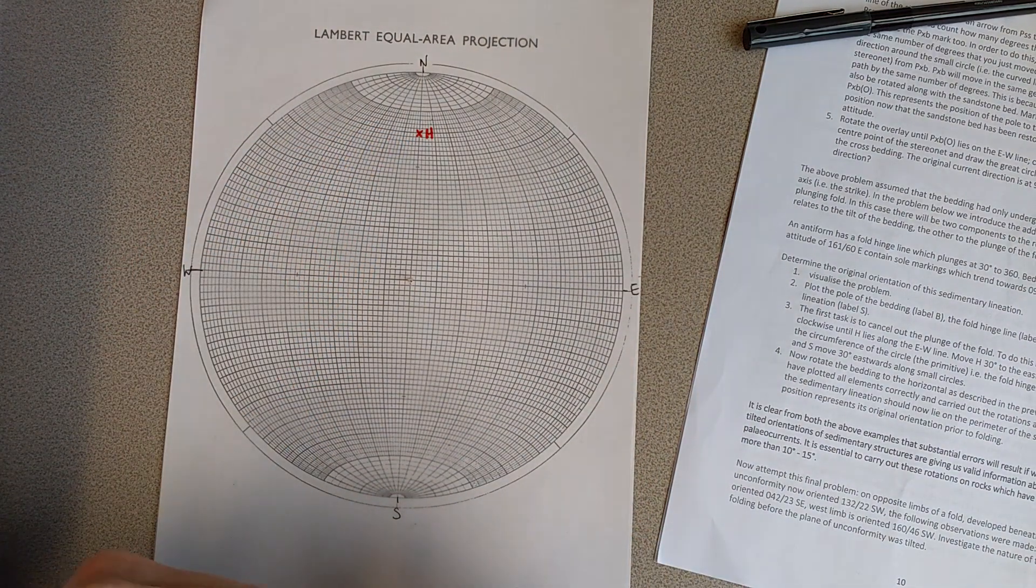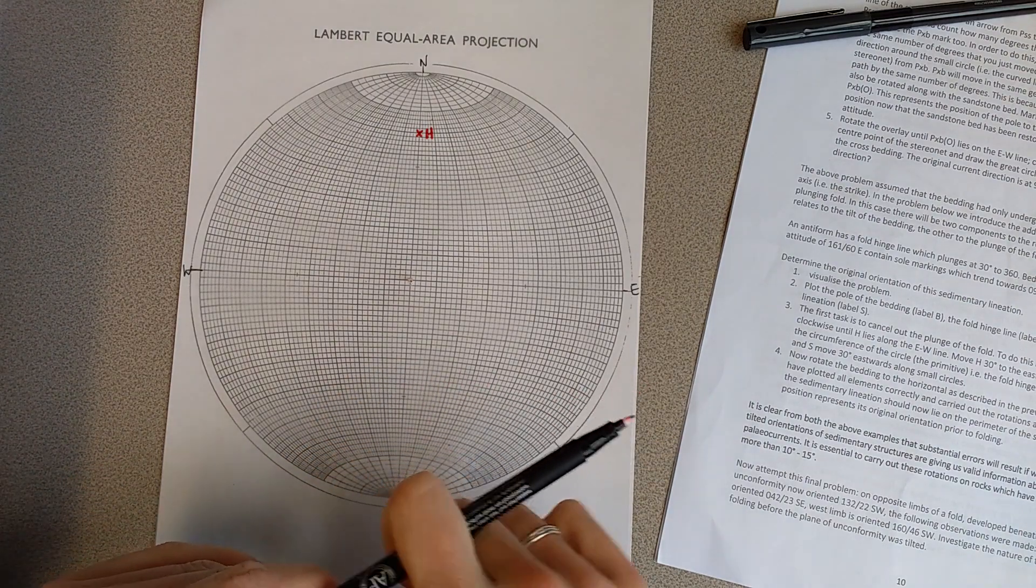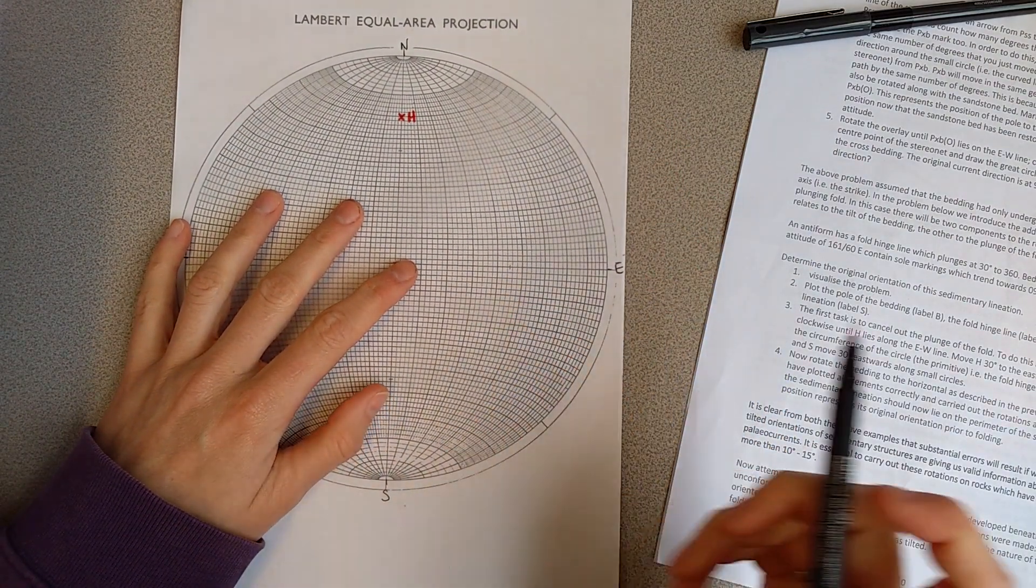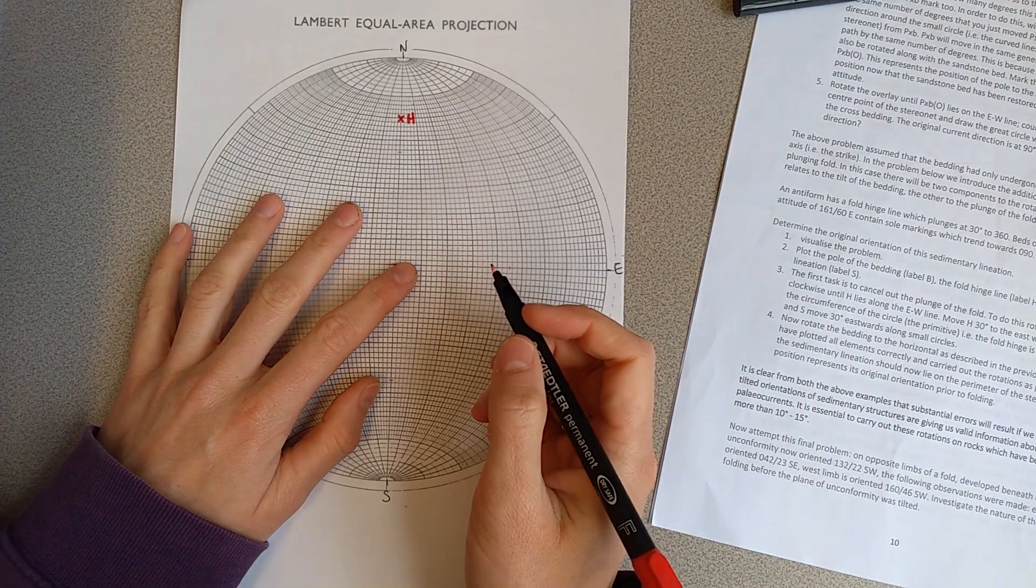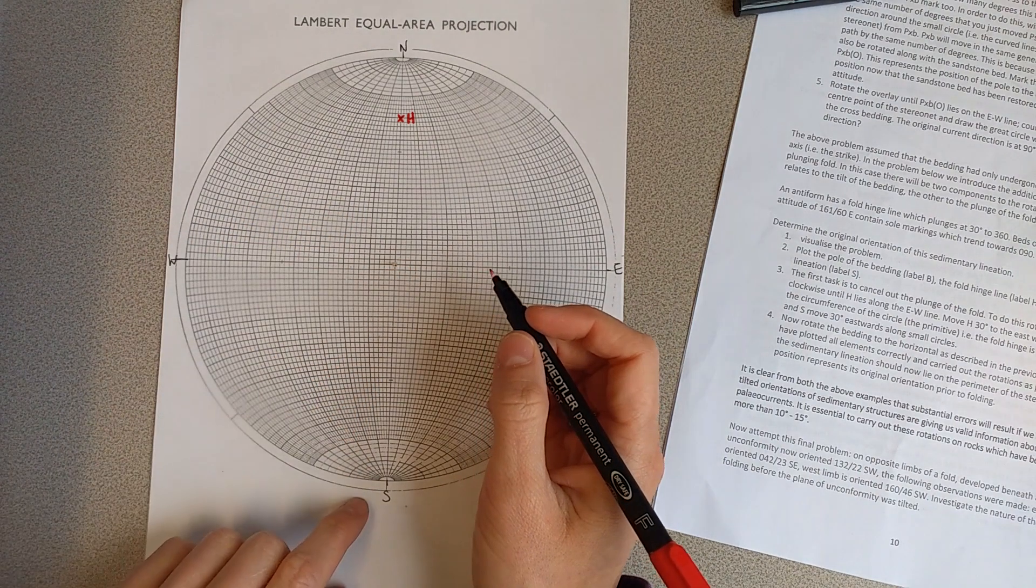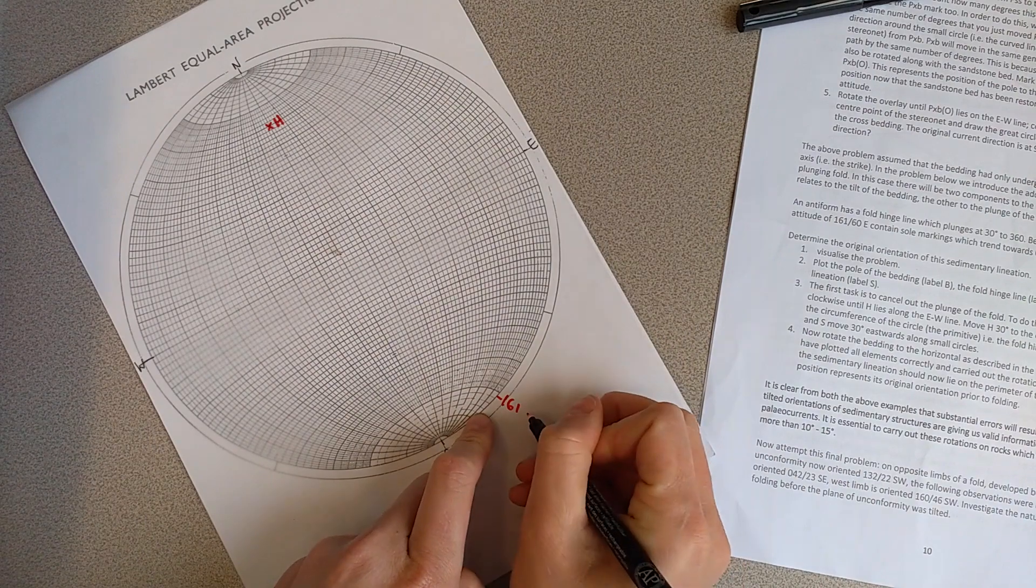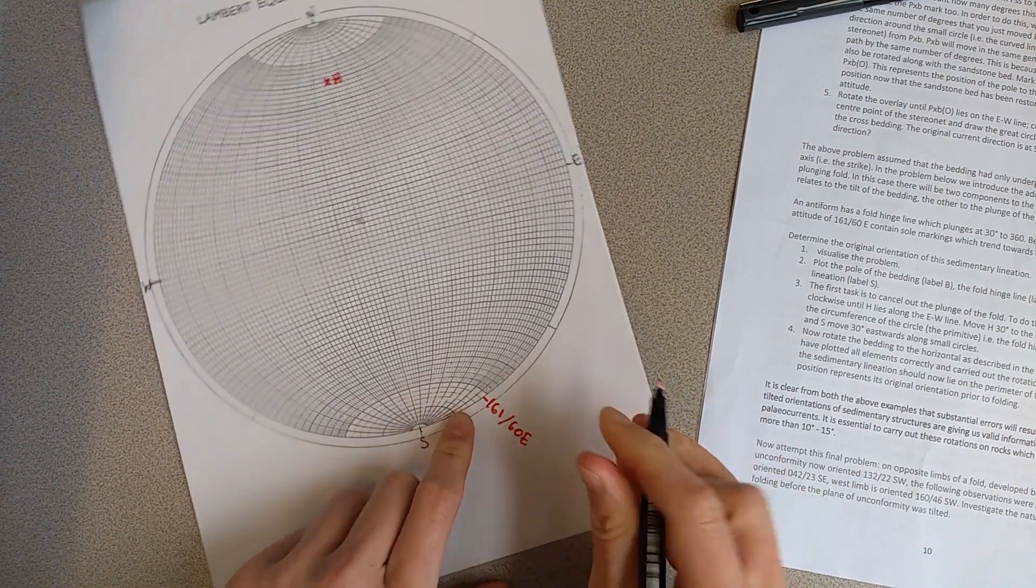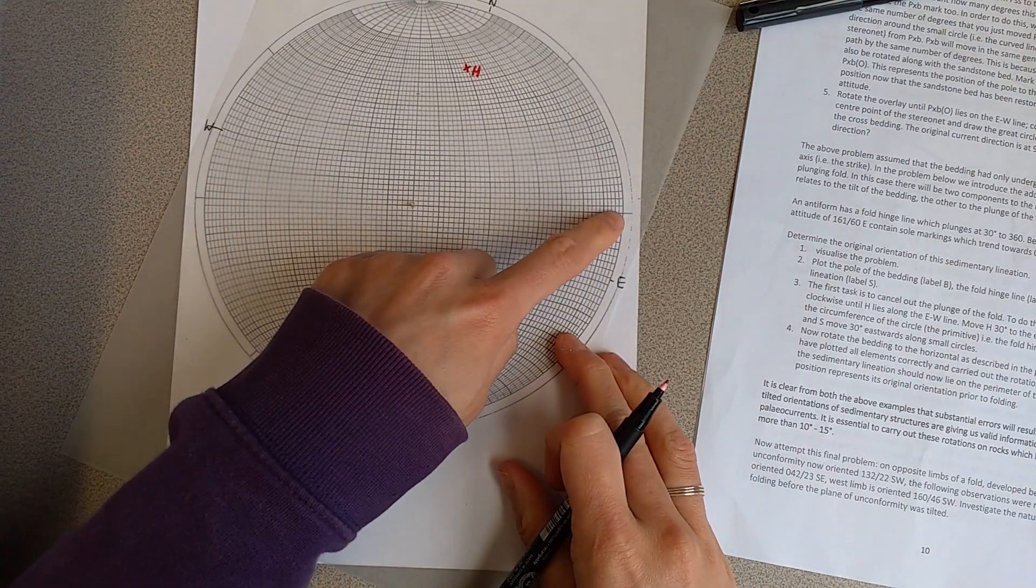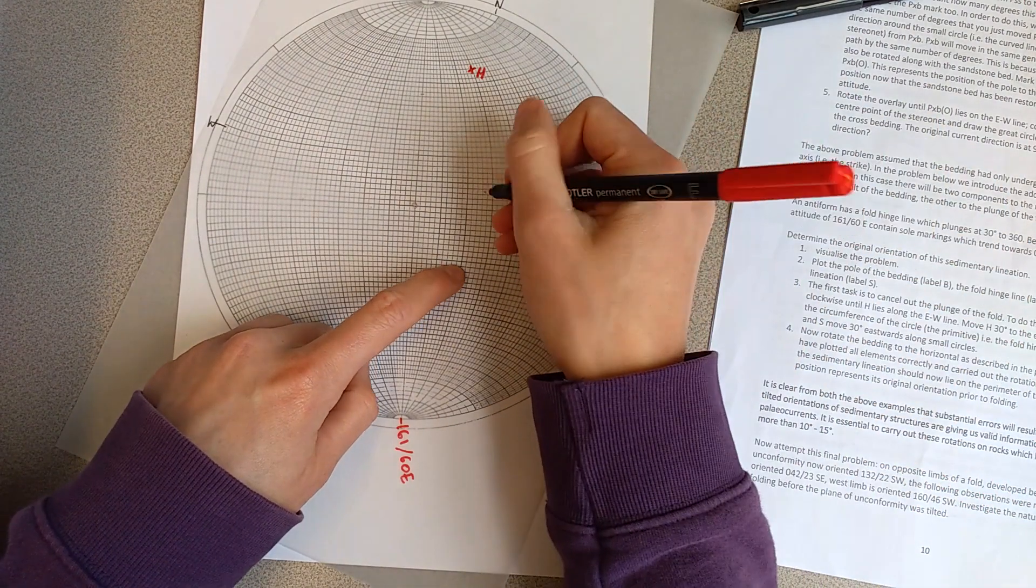We're told that the east limb has an attitude of 161, 60. Now you're not told to do this in the instructions, which is a slight mistake, but what I'm going to do is I'm going to draw out that eastern limb. So 161 is here, so we're going to do 161, 60 east. So I'm going to rotate that to the north-south line, and then we're going to count in from the eastern side because that's the way it's dipping. We're going to count in 60, which is here.